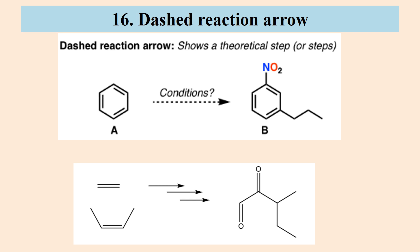Then there is the dashed reaction arrow. It shows that there are a number of theoretical steps or chemical reactions which convert reactant A to product B. Sometimes it is also shown as a multi-step arrow. These arrows show that reactants are converted to products by different steps along a multi-step path. It does not mean exactly three steps; the number of steps can be more or less than three.